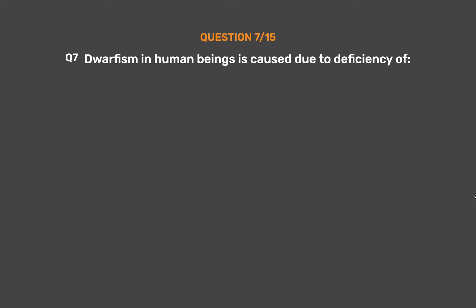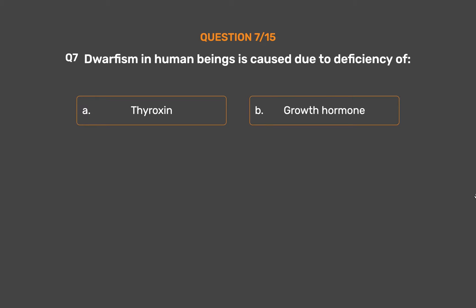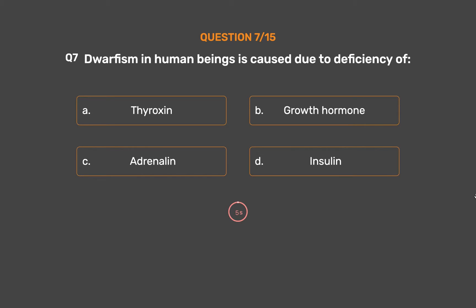Question No. 7. Dwarfism in human beings is caused due to deficiency of: Option A - Thyroxin. Option B - Growth hormone. Option C - Adrenaline. Option D - Insulin.